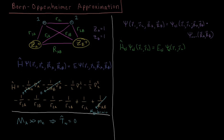The Schrödinger equation we're generally solving for molecules is the electronic Schrödinger equation — we solve for the wave functions of just the electrons, assuming the nuclei are either classical particles or that we'll solve for their wave functions later. The electronic Hamiltonian consists of the kinetic energy of the electrons: −½∇₁² and −½∇₂².